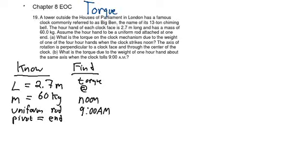It's 2.7 meters long, it's a uniform rod attached to one end, and in this problem we're asked to find the torque on this hour hand at two different positions on the clock. So the first part, for A, we would like to solve this problem when the hour hand is located at noon.